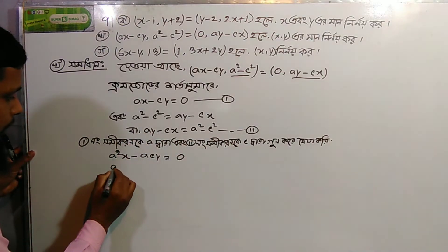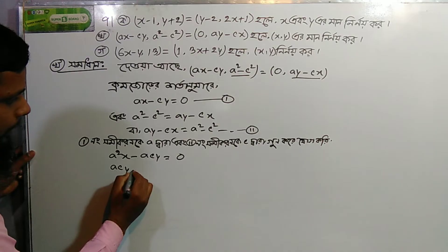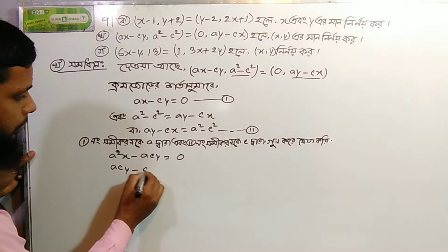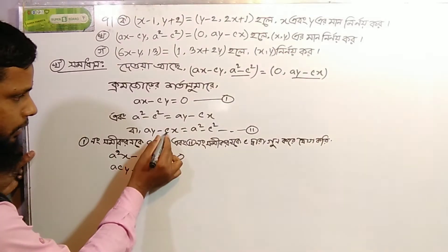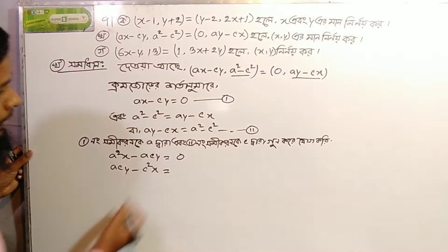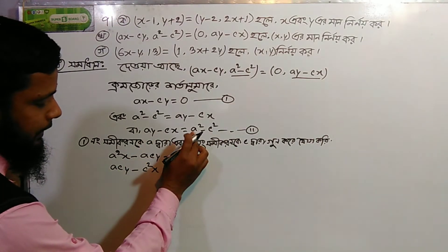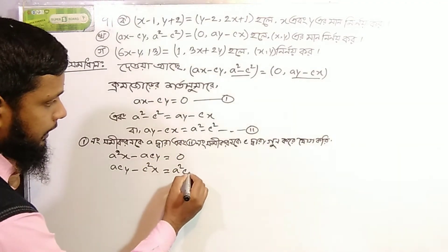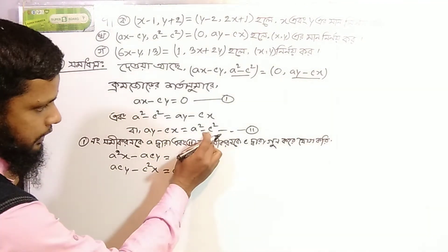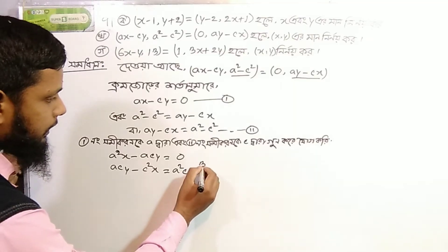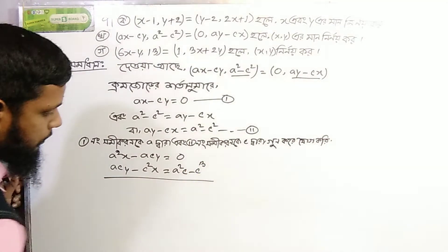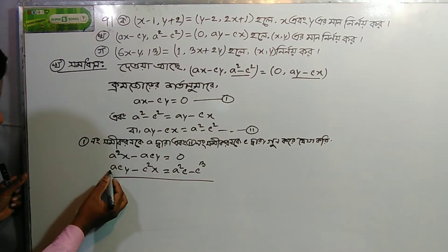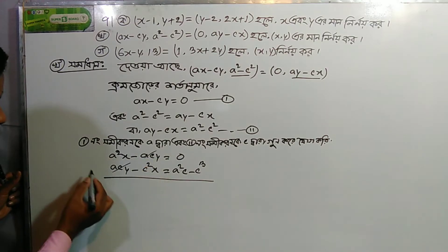Substituting c and y: c plus a·c minus c·x equals c squared x. Then a·c·y plus a·c·y — these terms will cancel out.